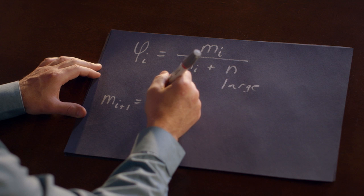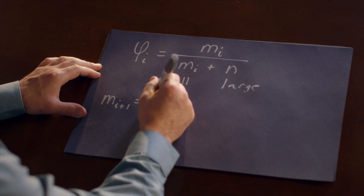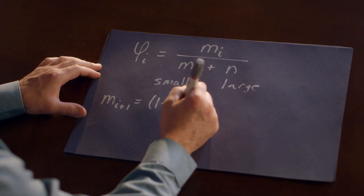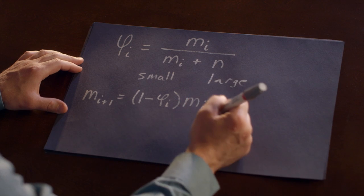So that's one minus phi sub i. And if that happens, then the number of small pores stays the same.